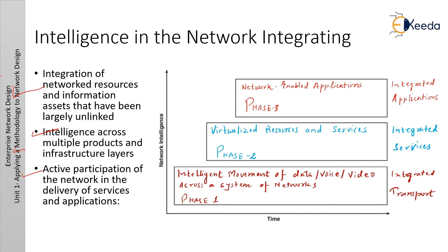This vision offers an evolutionary approach consisting of three phases in which functionality can be added to the infrastructure as required. The three phases are: integrated network-enabled application, virtualized resource and services, and intelligent movement of data, voice, and video across a system. Phase one is known as integrated transport, phase two as integrated services, and phase three as integrated application. In phase one — integrated transport — everything: data, voice, and video consolidates onto an IP network for secure network convergence. By integrating data, voice, and video transport into a single standards-based modular network, organizations can simplify network management and generate enterprise-wide efficiencies. Network convergence also lays the foundation for a new class of IP-enabled applications known as Cisco Unified Communication Solutions.